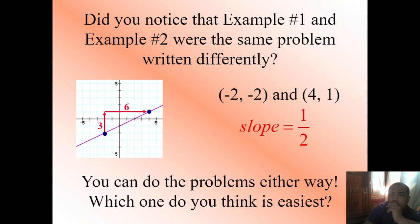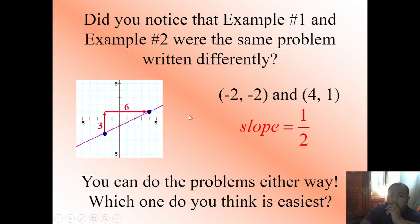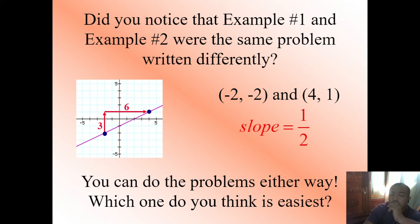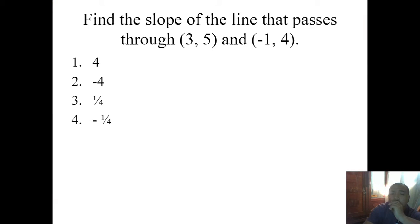Did you notice that example number one and example number two were the same problem written differently? In problem one it was given as a graph, and we used rise over run, obtaining one half. The given points were (-2, -2) and (4, 1) — the same problem written differently. You can do the problems either way. Which one do you think is the easiest — rise over run, or using the formula? Whatever you think is easiest, it's your choice.